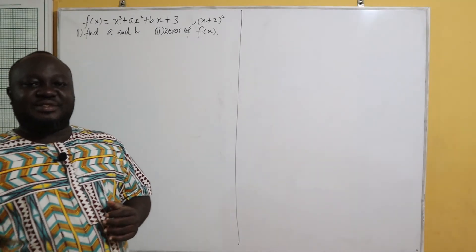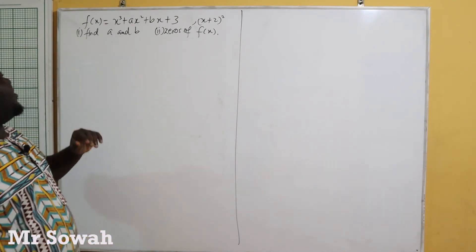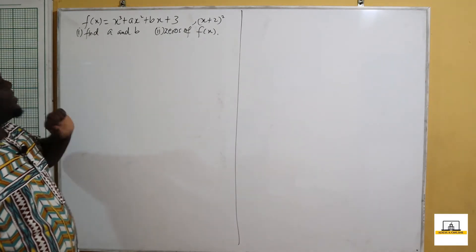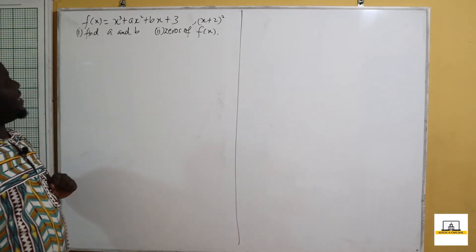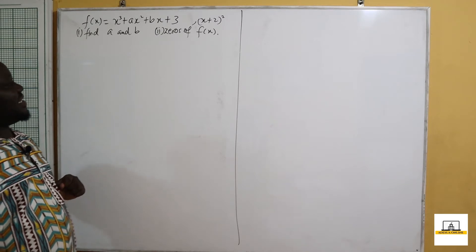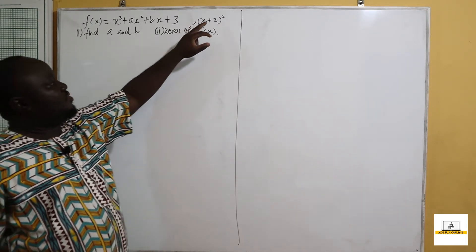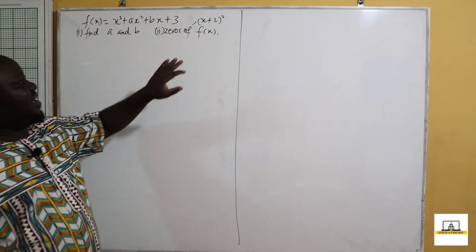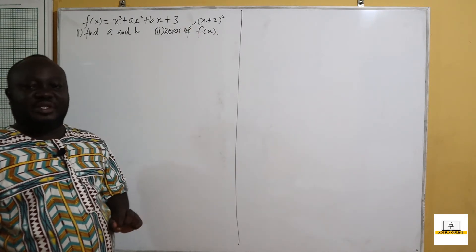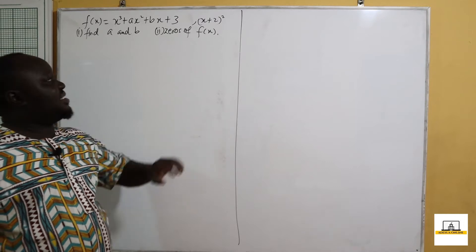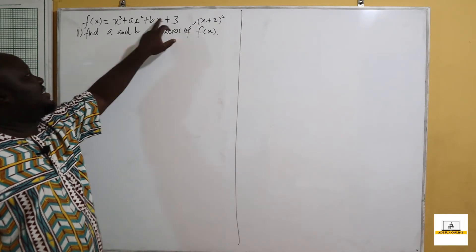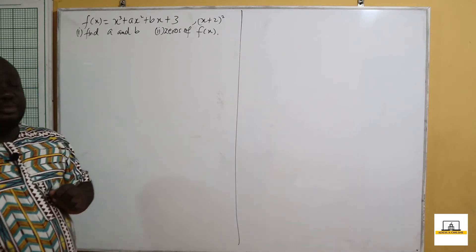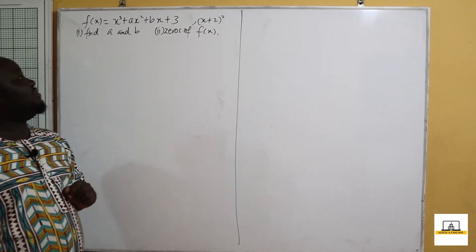We have a question at hand and we are asked to find the values of a and b if f(x) is equal to x cubed plus ax squared plus bx plus 3, and then (x+2) all squared leaves a remainder of 0. So if (x+2) all squared leaves a remainder of 0, it means (x+2) all squared is a factor of this polynomial f(x), which is equal to x cubed plus ax squared plus bx plus 3.